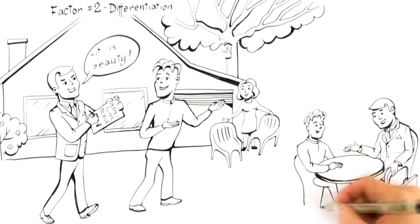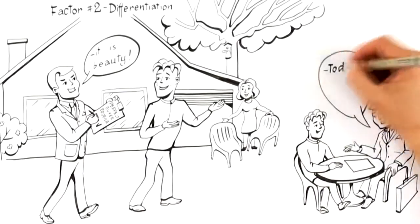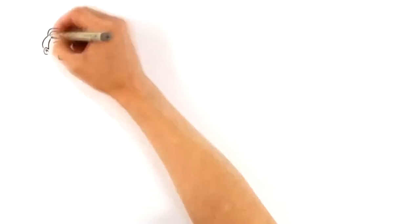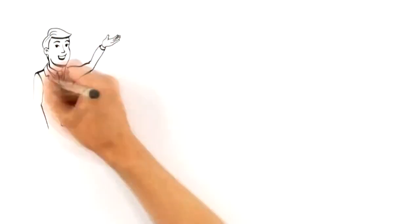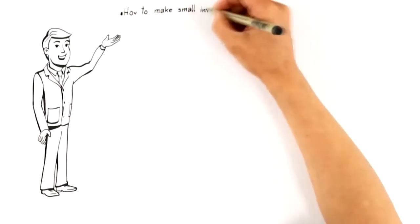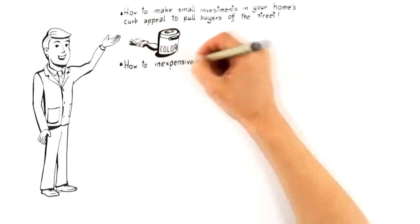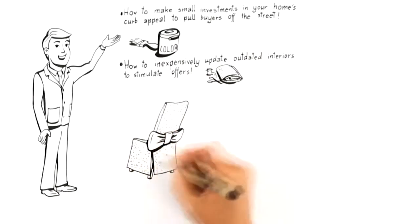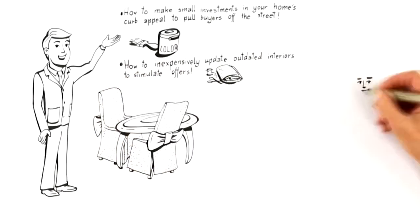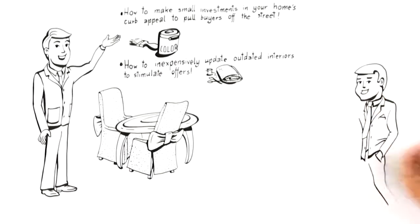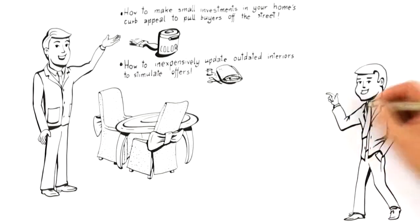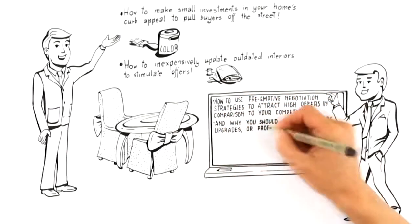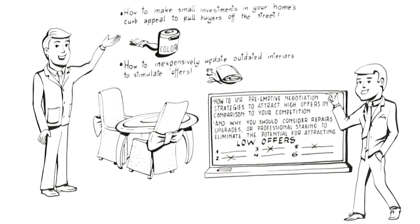Expert advisors attract these perfect buyers by differentiating your home from other homes on the market by first anticipating a buyer's wants and needs. As you'll notice, the key focus here is not on past market sales, but what is likely to attract a top-paying buyer in today's market. This means the advice you should receive to attract buyers like this must include how to make small investments in your home's curb appeal to pull buyers off the street, how to inexpensively update outdated interiors to stimulate offers, how to use pre-emptive negotiation strategies to attract high offers in comparison to your competition, and why you should consider repairs, upgrades, or professional staging to eliminate the potential for attracting low offers.